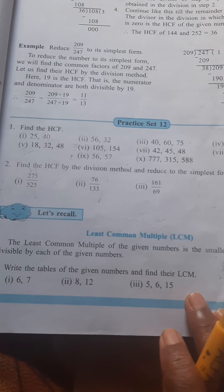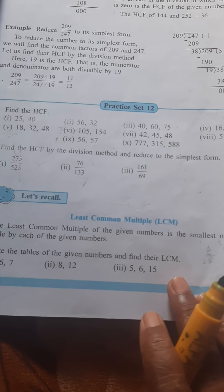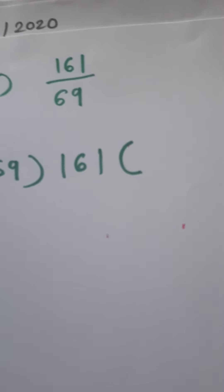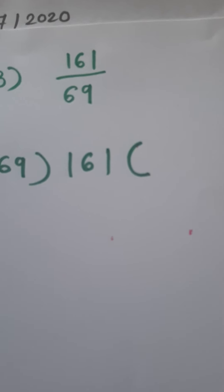Find the HCF by the division method and reduce to the simplest form. The third example is 161 divided by 69.